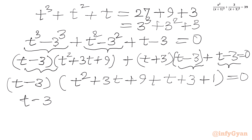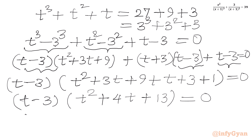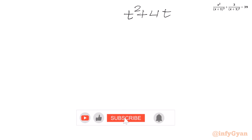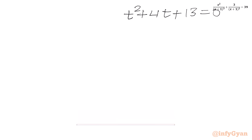Now we take (t − 3) common out. In the other bracket we write t² + 3t + 9 + t + 3 + 1 = 0. Combining like terms: t² + 4t + 13, so we have (t − 3)(t² + 4t + 13) = 0. From the first factor, t − 3 = 0 gives t = 3.